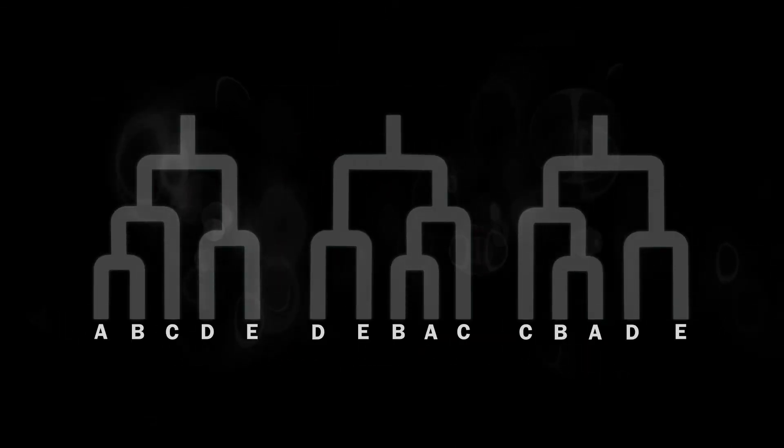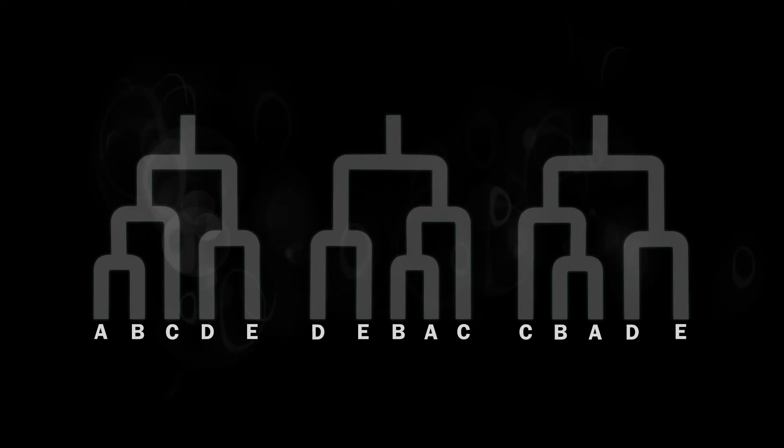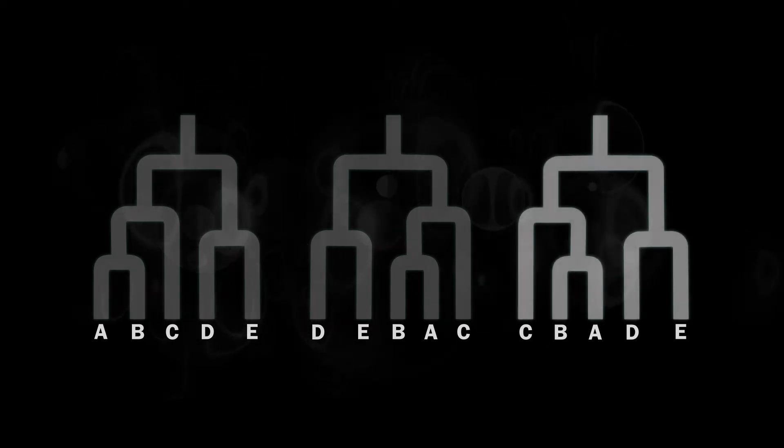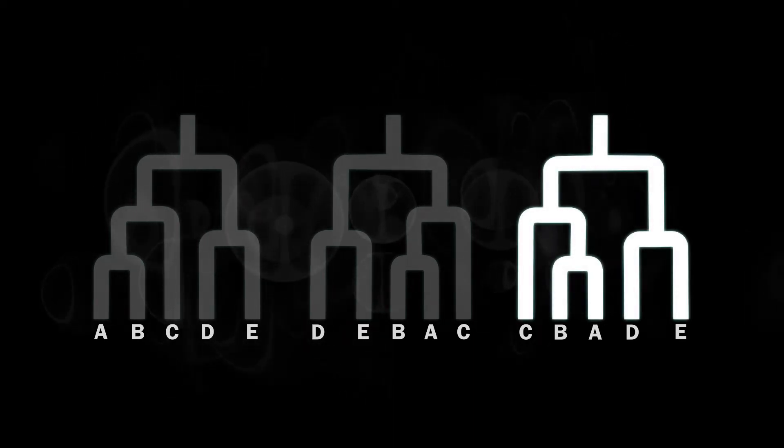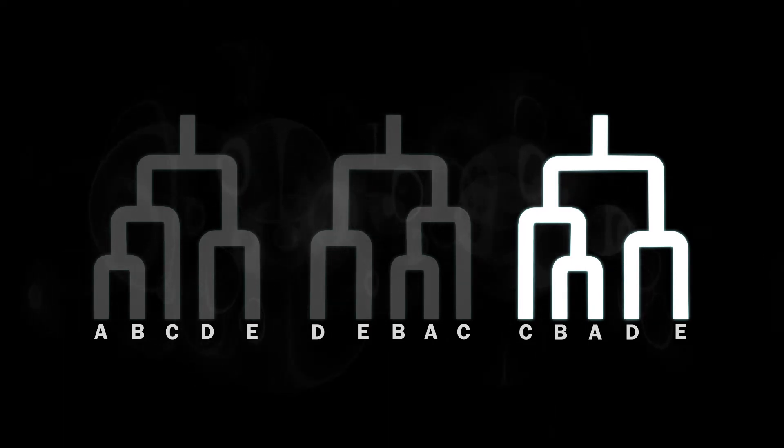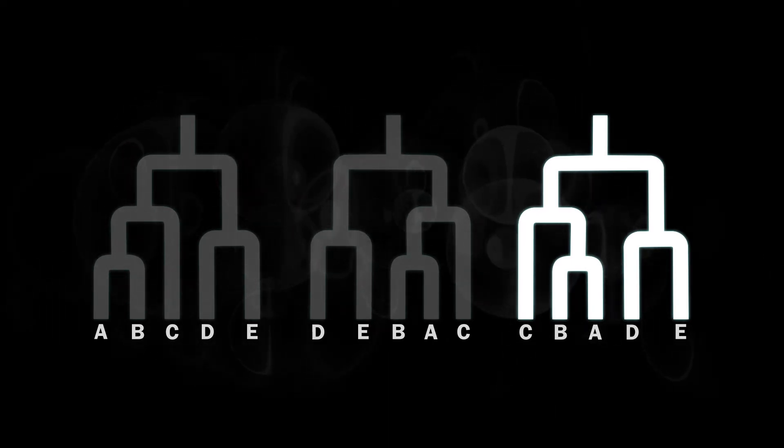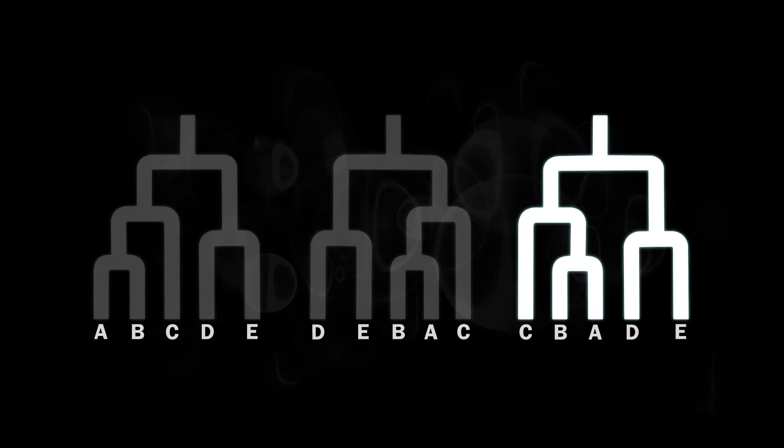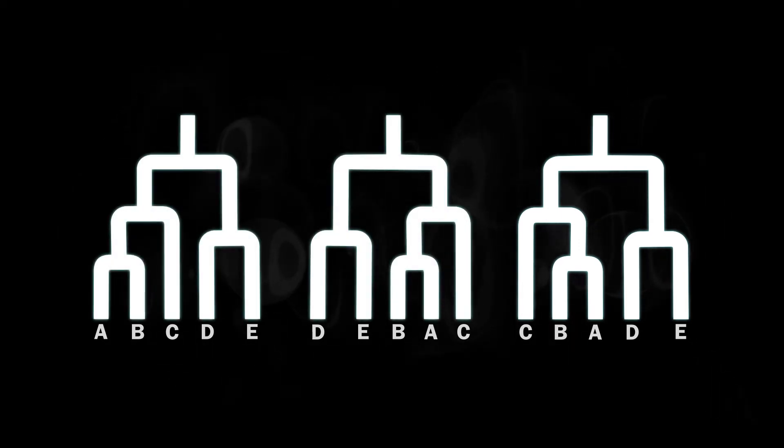The orientation of the ends of each branch is not significant. All that matters is the branching pattern. So these trees all say the same thing. Just because A and D are next to each other in this tree doesn't mean that A is more related to D than it is to E or to C, because the tree could just as easily be drawn like this or like this.